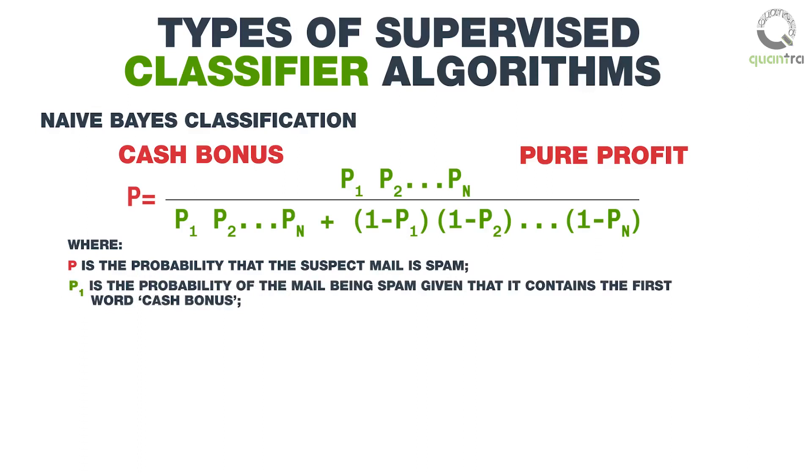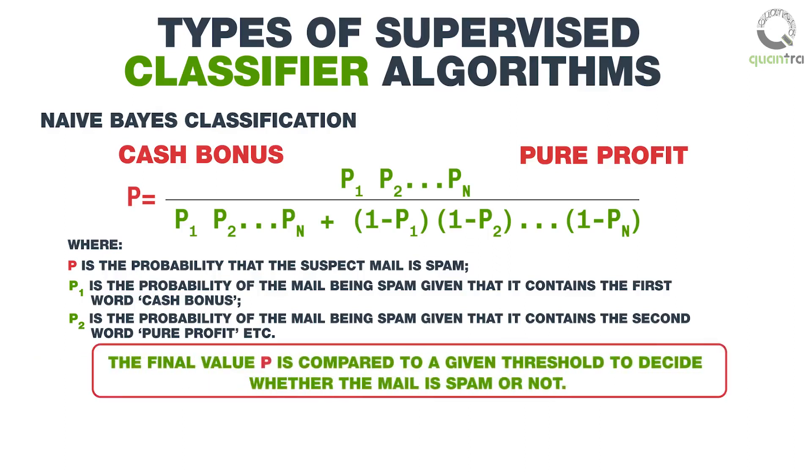P1 is the probability of the mail being spam, given that it contains the first word cash bonus. P2 is the probability of the mail being spam, given that it contains the second word pure profit, etc. The final value of P is compared to a given threshold to decide whether the mail is spam or not.